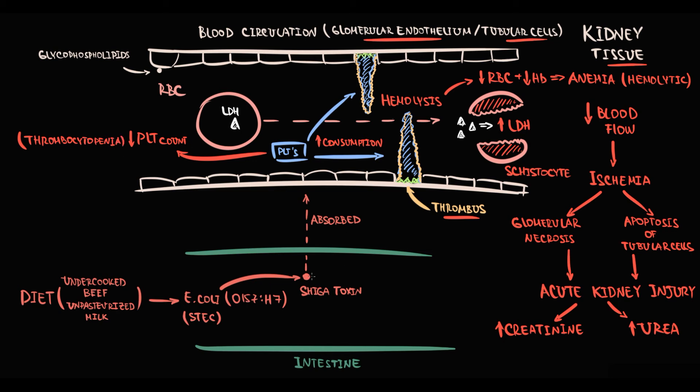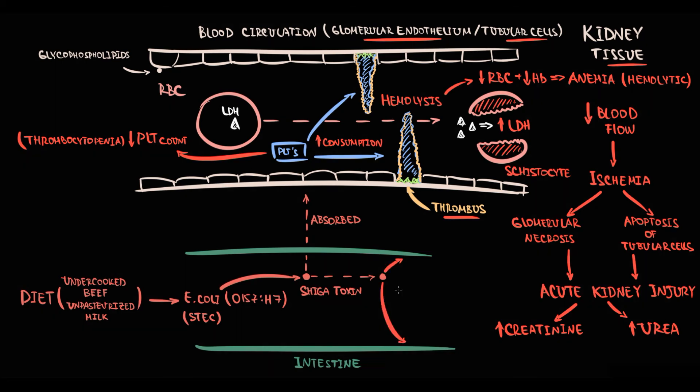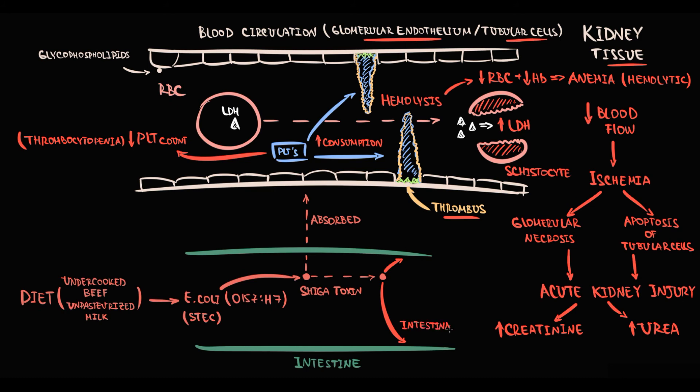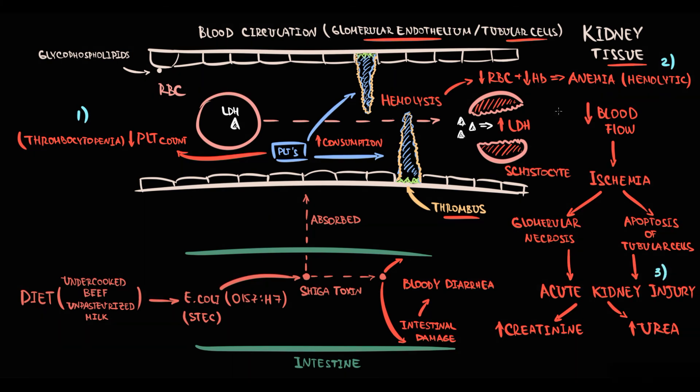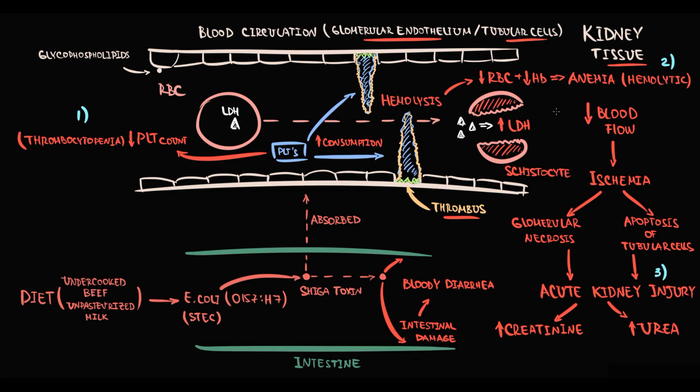In addition to this, E. coli infection is an intestinal infection. Shiga toxin by its nature primarily targets intestinal epithelial cells, and damage to intestinal epithelium manifests with bloody diarrhea. So we have the so-called triad with thrombocytopenia, microangiopathic hemolytic anemia, and acute kidney injury. In addition, patients due to intestinal infection also have bloody diarrhea.